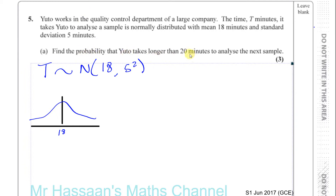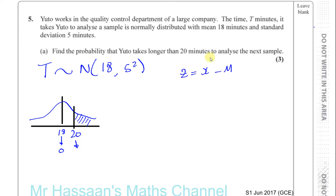We want to find the probability that Yuto takes more than 20 minutes, so we're looking at the area to the right of 20 once values are standardized. The standardized value of 18 is 0 because it's the mean. The standardized value of 20 is found using Z = (X − mean) / standard deviation = (20 − 18) / 5 = 2/5 = 0.4.